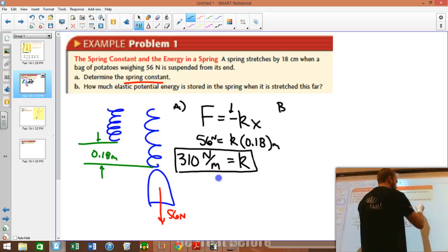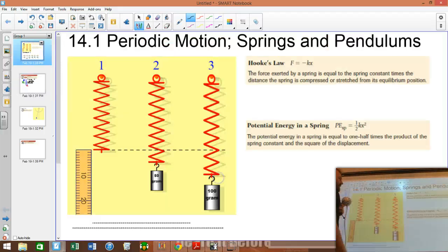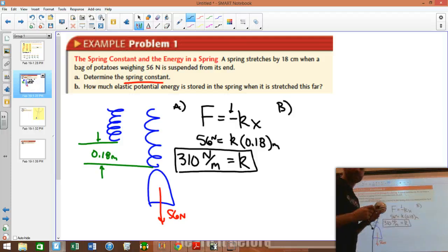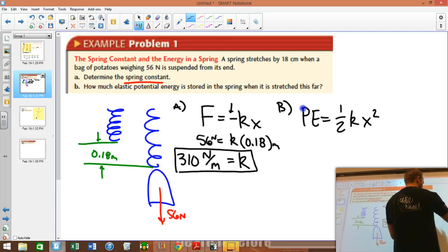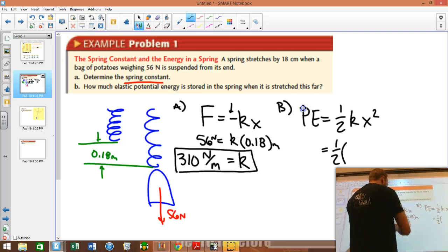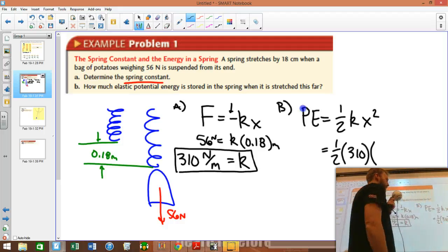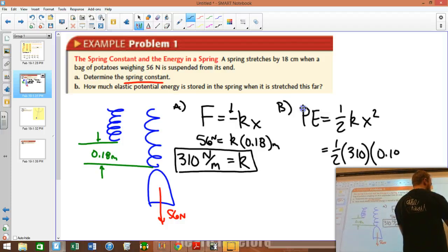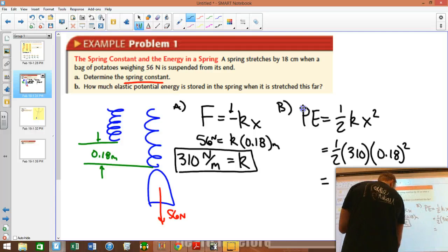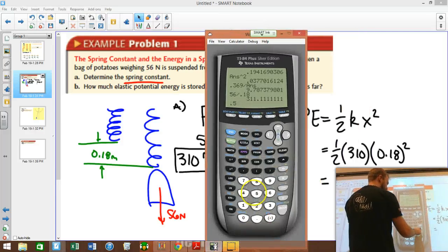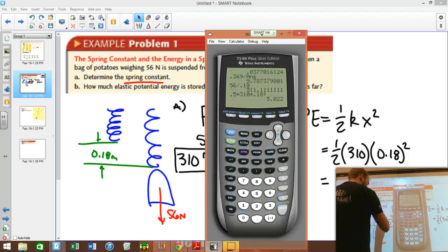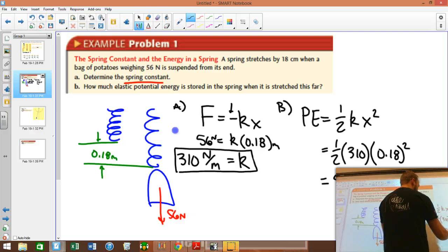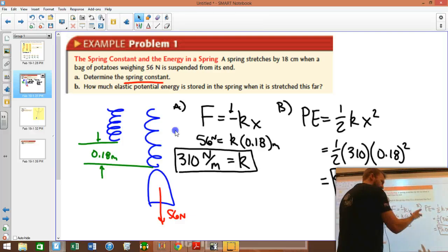Part B says, what's the elastic potential energy in this? You can use that equation that, I can't remember it off the top of my head. PE equals 1 half Kx squared. So we're going to apply that equation right here. The potential energy equals 1 half Kx squared. So 1 half, the spring constant, which we just found, 310. X, the distance that we're stretching it, 0.18 squared. So I run that through my calculator. 0.5 times 310 times 0.18 squared. 5.0. Now that's joules energy.